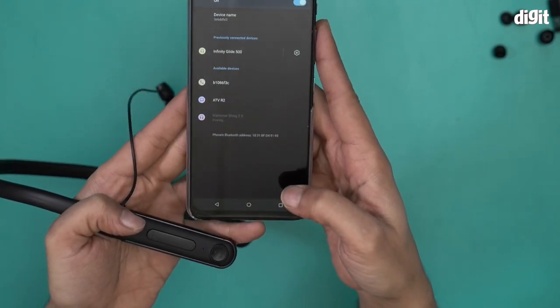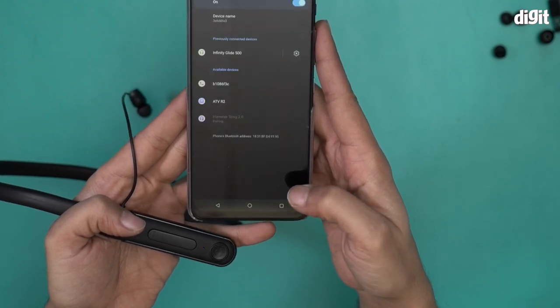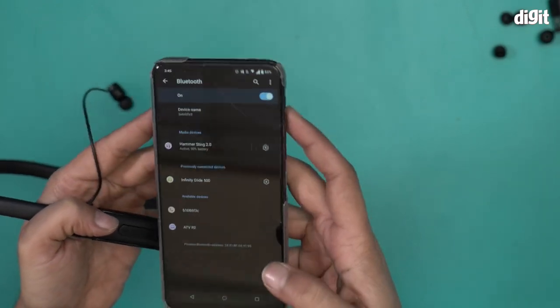And then click on pair when that option arrives. There you go, pair. There you go, it says Hammer Sting 2.0 active, 90% battery. Now let's see if this actually works.